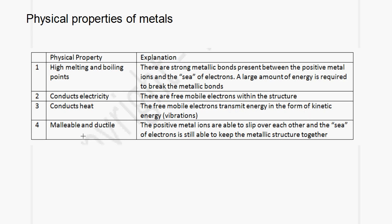The fourth physical property is that metals are malleable and ductile. Malleable meaning that they are bendable and can be reshaped, and ductile meaning that they can be stretched into a wire. The reason for this is that the positive metal ions are able to slip over each other, and the sea of electrons is still able to keep the metallic structure together.